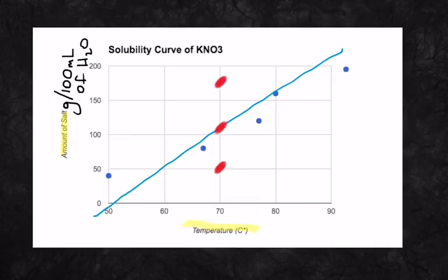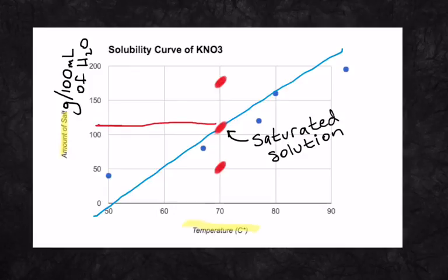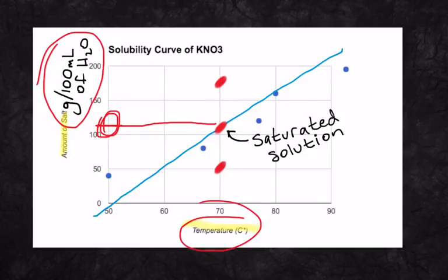Okay, so the dot right there, the one in the middle. If I had about, gosh, I'm looking here about, what, 120 grams or so of salt at 70 degrees Celsius, I am going to have a saturated solution. Let me say that again. If I put about 120 grams of the potassium nitrate in 100 milliliters of water at 70 degrees, I'm going to have a saturated solution.